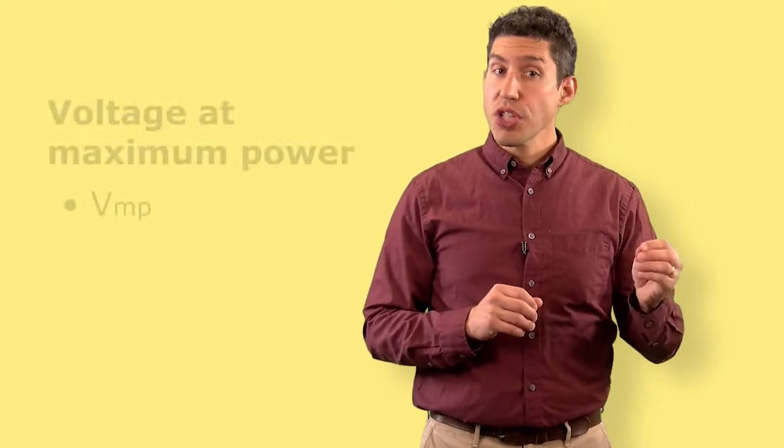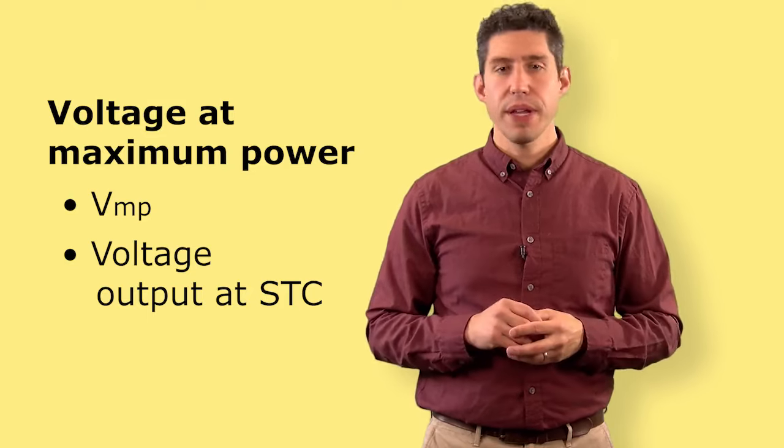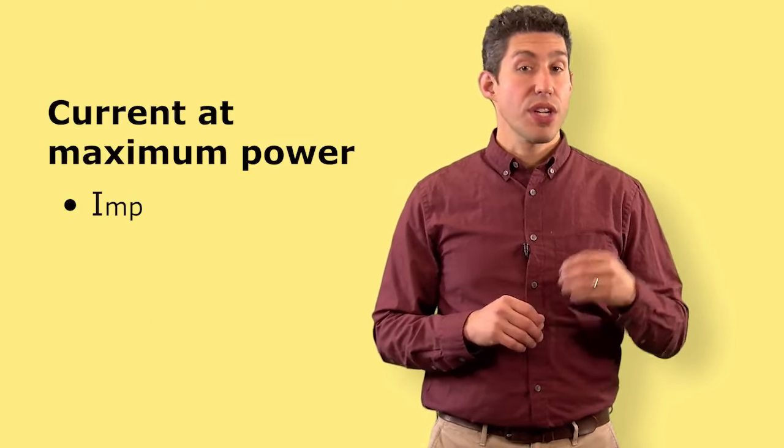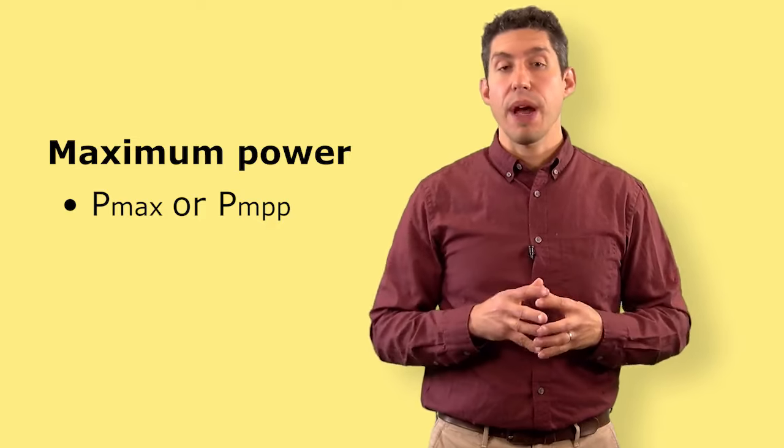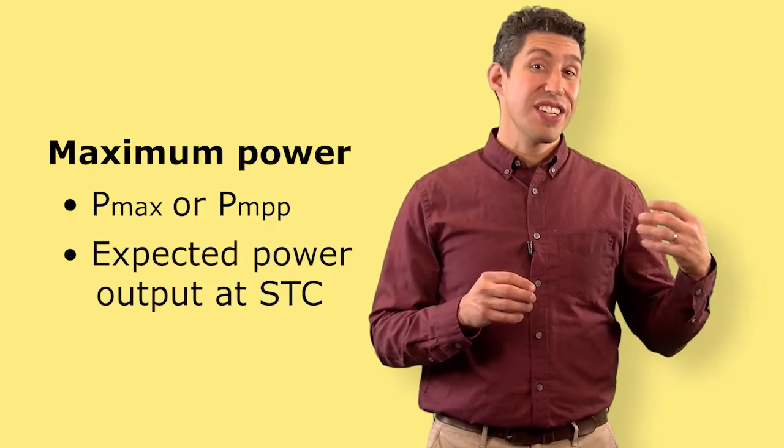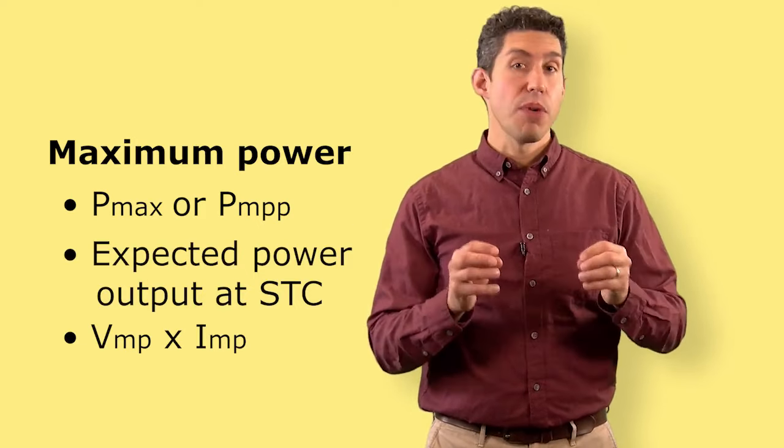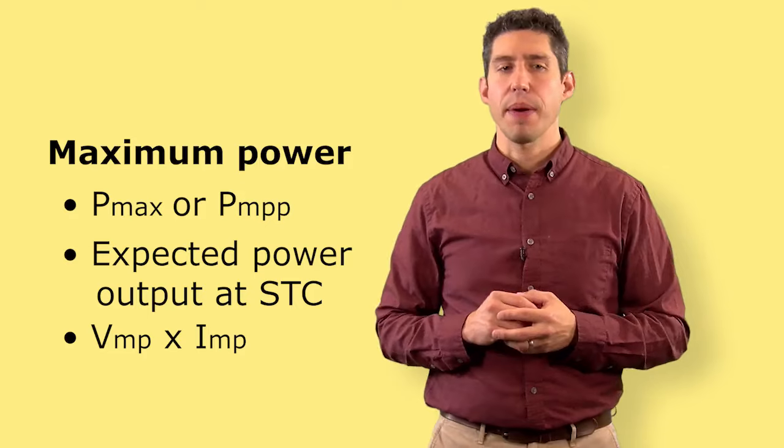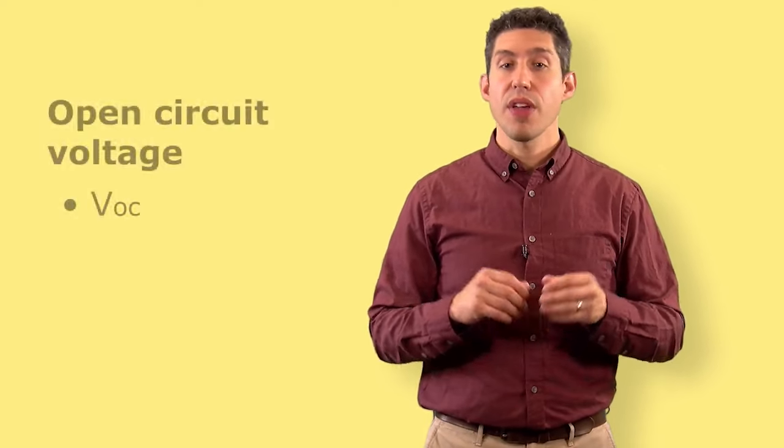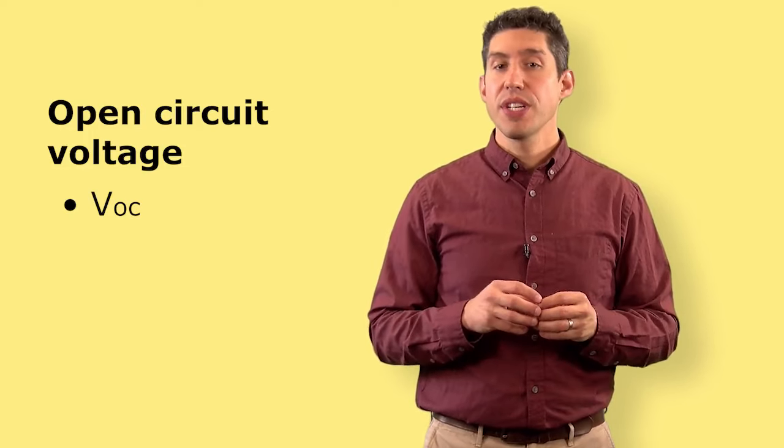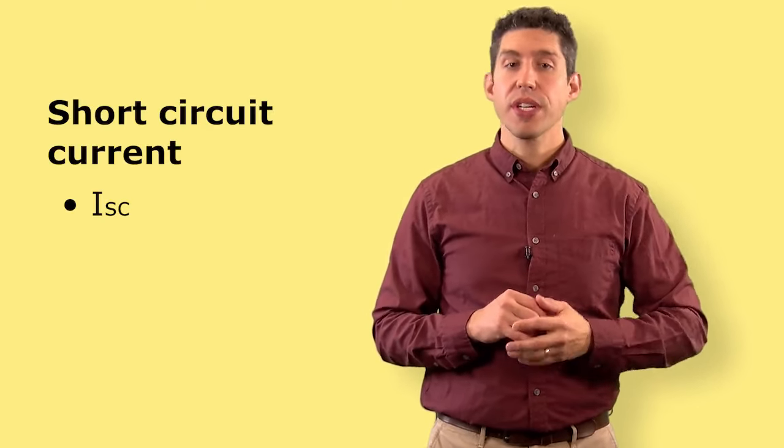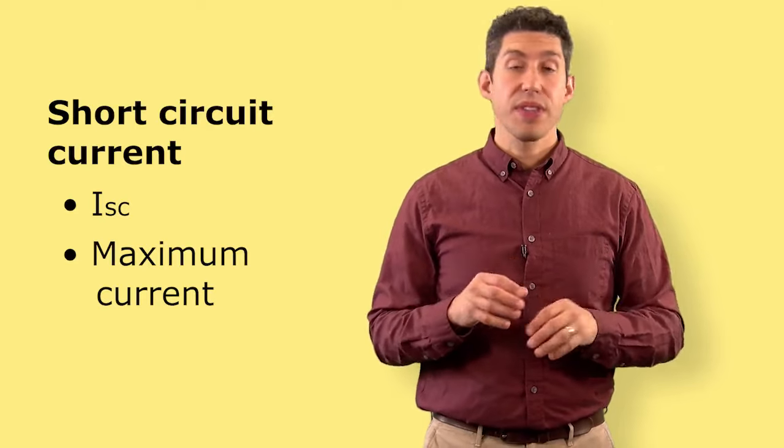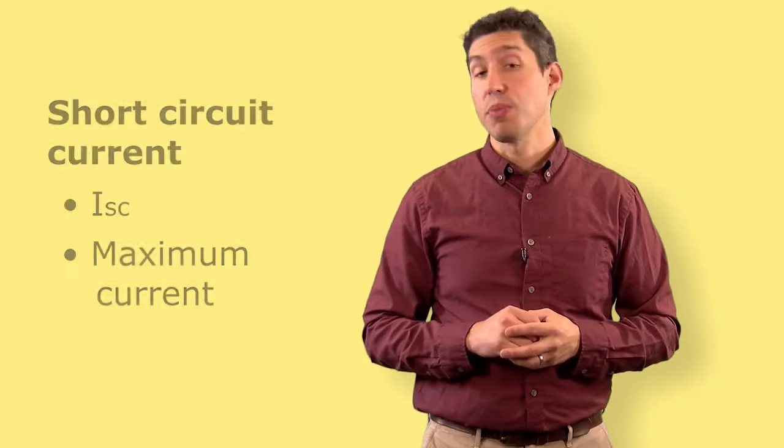The five terms are the voltage at maximum power, which is the voltage being put out by the solar panel, the current at maximum power, which is the current that's being put out under maximum power, and the power, or maximum power, which is the power of the solar panel, which is actually a calculation of the voltage at maximum power multiplied by the current at maximum power. The other two key terms are the VOC, or open circuit voltage, which is the maximum voltage that the cell will ever put out, and the ISC, or short circuit current, which is the maximum current the cell will ever put out, or the module will ever put out. We'll look at these two terms more in another segment.